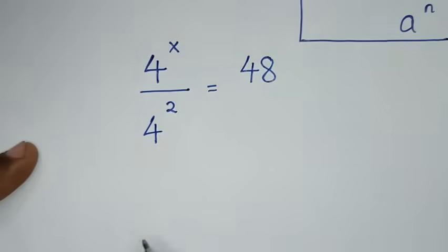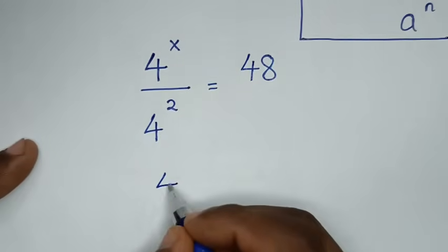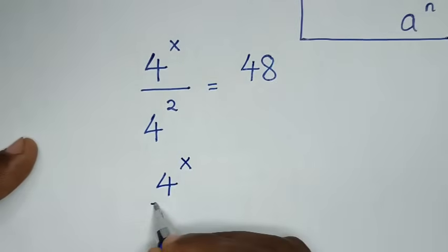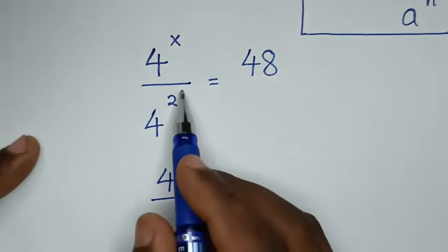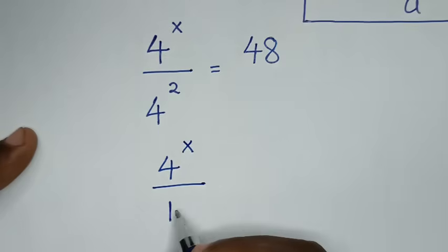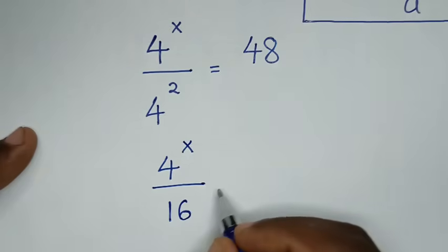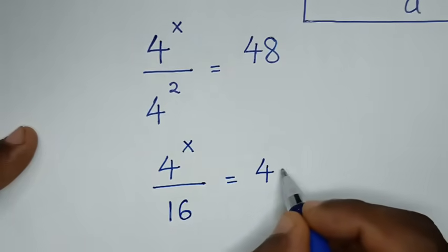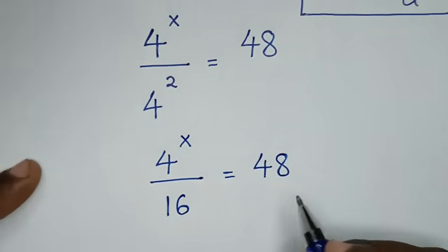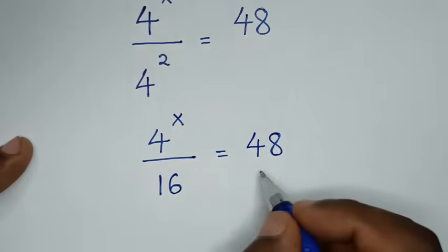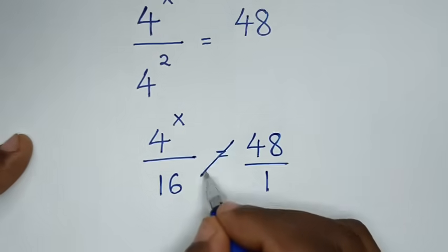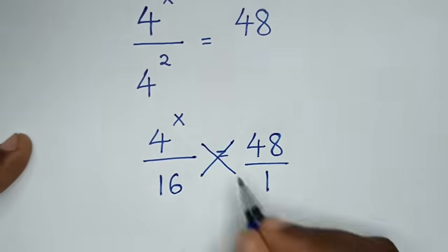Then in the next step, it will be 4 power of x over 4 power of 2, which is 4 squared, it is 16, is equal to 48. Then this 48 is the same as 48 over 1, so we will cross multiply.